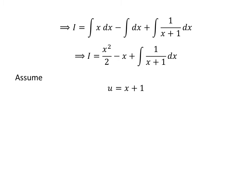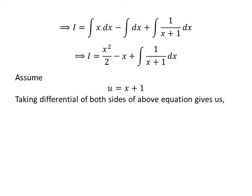We will solve the integral of 1 upon x plus 1 with respect to x by substitution method. Assume u is equal to x plus 1. Taking the derivative of both sides, we get the differential of u is equal to the derivative of x plus 1 with respect to x, into the differential of x. The derivative of x plus 1 with respect to x is equal to 1, so the differential of u is equal to the differential of x.